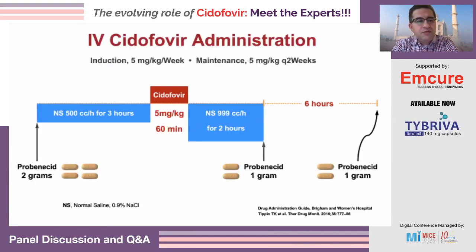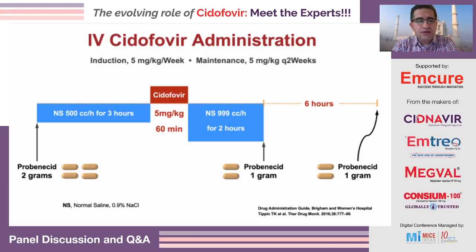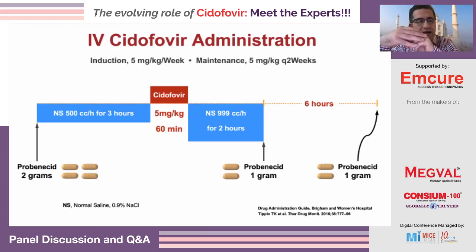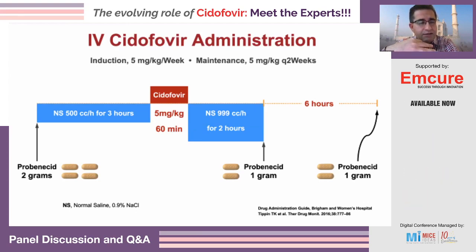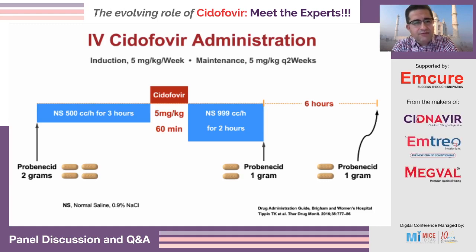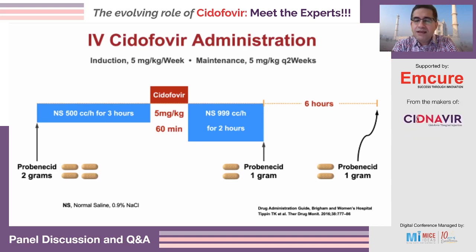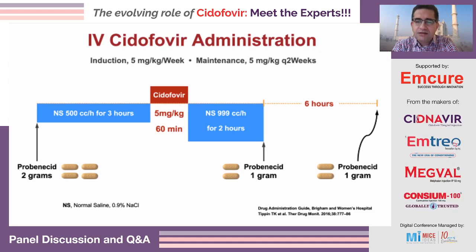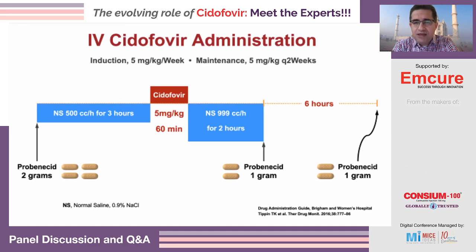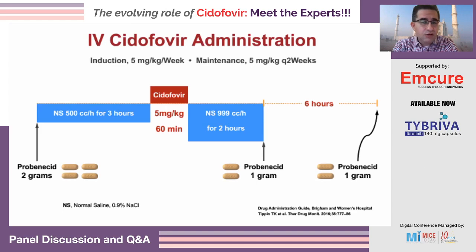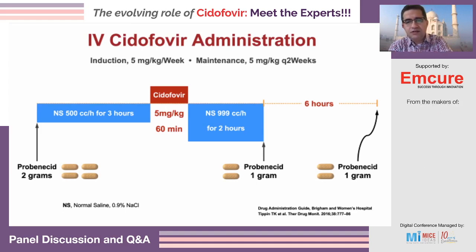This is how we give cidofovir. We can give it to transplant and non-transplant patients, with a nephrotoxicity risk of 20% or less. We start with two grams of probenecid, then give normal saline — 500 cc an hour for three hours. Then cidofovir at five milligrams per kilogram over 60 minutes, followed by a liter an hour for two hours. Then another gram of probenecid, and six hours later another gram. When we do this as an outpatient, we make sure the patient has probenecid to take at home six hours after discharge.